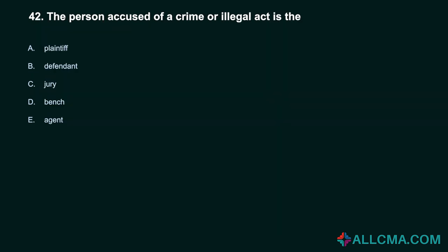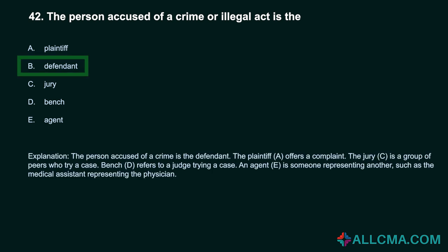Question 42: The person accused of a crime or illegal act is the: A. Plaintiff. B. Defendant. C. Jury. D. Bench. E. Agent. Correct answer: B. Defendant. The person accused of a crime is the defendant. The plaintiff offers a complaint. The jury is a group of peers who try a case. Bench refers to a judge trying a case. An agent is someone representing another, such as the medical assistant representing the physician.